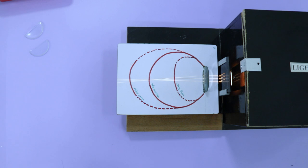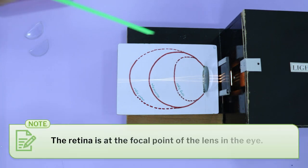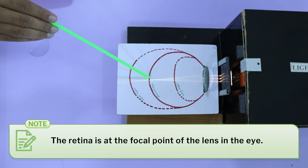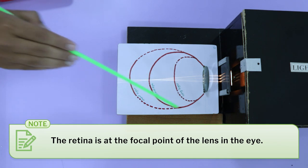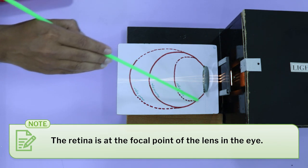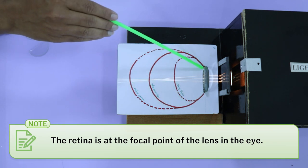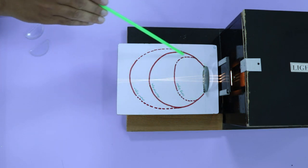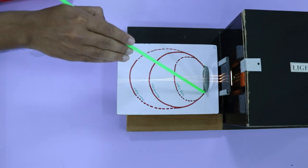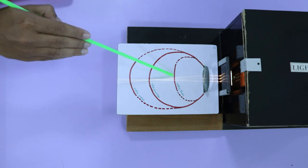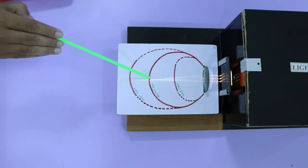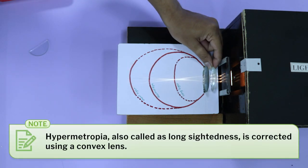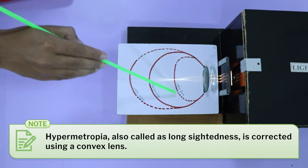In this setup, we can introduce a model that shows the position of the lens in the human eye. The lens in our eye is a convex-shaped lens, and the retina is normally at the focal point of this lens. In the case of hypermetropia, the retina is closer than the focal length of the lens. We can show how a convex lens is used to correct for this defect.